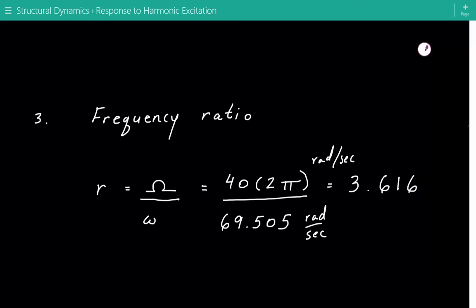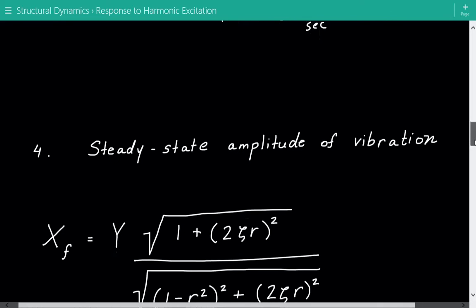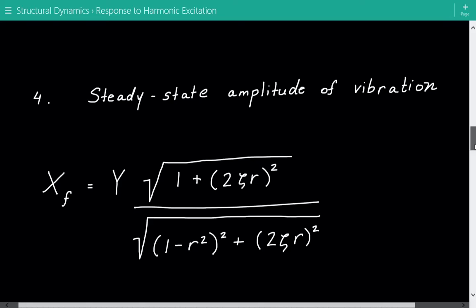Now we can calculate the steady state amplitude of vibration. Here's the formula for steady state vibration amplitude considering base excitation. It's equal to Y, capital Y, which is the amplitude of vibration of our base, times the square root of 1 plus 2 times zeta r squared, where zeta is the damping factor, divided by the square root of 1 minus r squared squared plus 2 times zeta r squared.